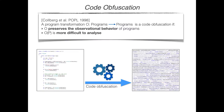Program obfuscation has been defined in 1998 as any program transformation that preserves the intended program behavior while making the program more difficult to analyze. Despite some impossibility results related to code obfuscation, in the last 20 years we have seen the design and development of many different obfuscating transformations and research works that try to understand the potentiality and limits of code obfuscation in protecting code properties.